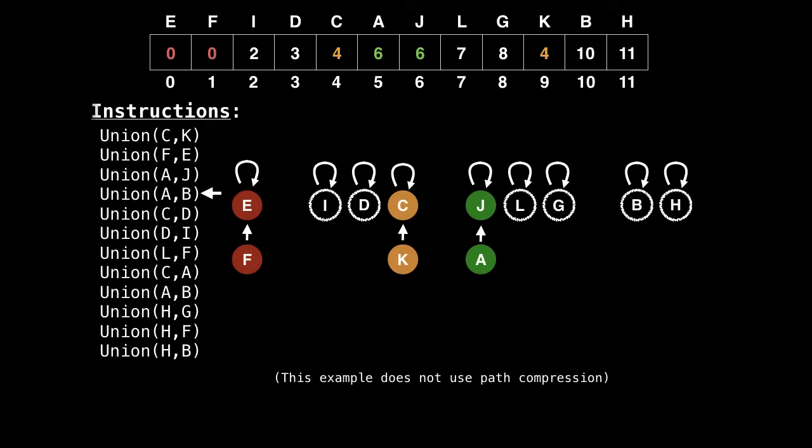And in general, I'm going to merge smaller components into the larger ones. So now, b is going to point to j, because the green group's root node was j.